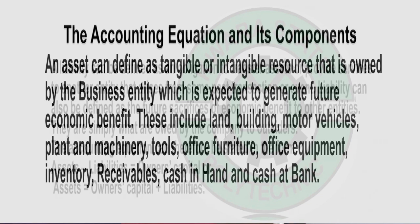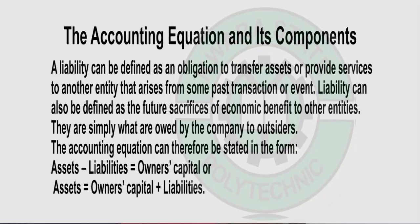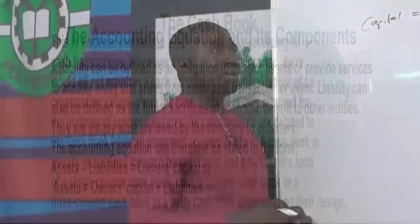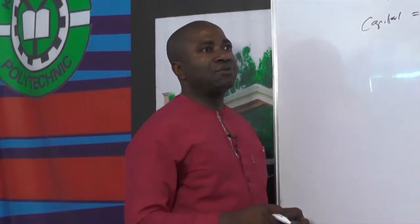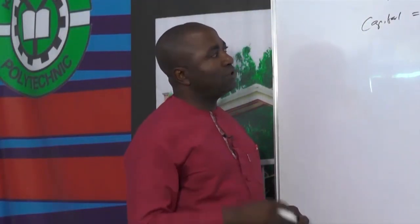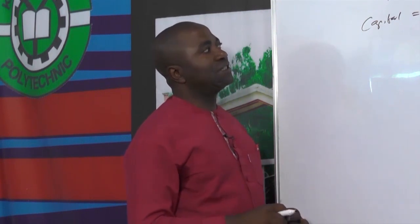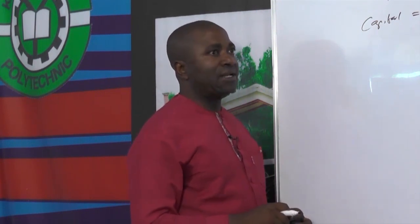Now we look at the other side, which is the liability. A liability can be defined as an obligation to transfer assets or provide services to another entity that arises from some past transaction or event. A liability can also be defined as the future sacrifices of economic benefit to other entities. This can be simply known as the amount of resources that is owed to outsiders.